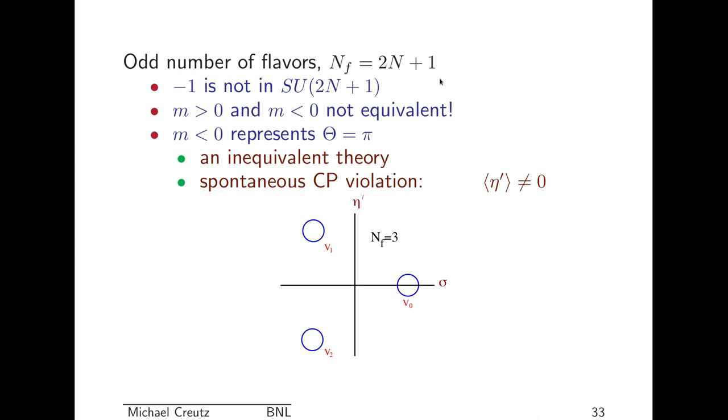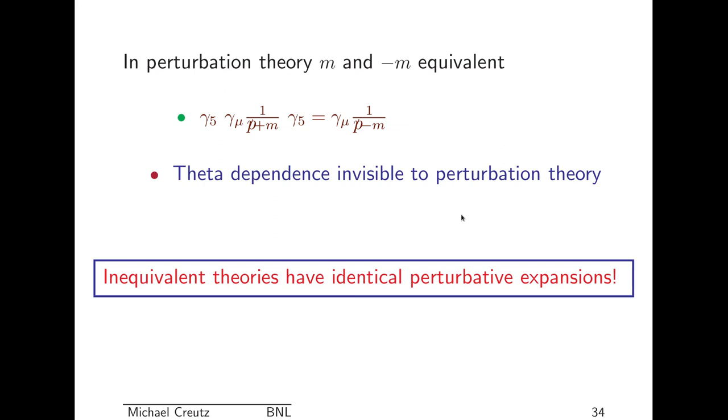Okay, so now we're going to talk a little bit about an odd number of flavors. N_f is 2N plus 1. Minus 1 is not an element of SU of an odd number. This means that a positive mass theory and a negative mass theory are non-equivalent. I can't rotate M into minus M. And in fact, M less than 0 represents theta equals pi, which is an inequivalent theory. And at theta of pi, I've already argued that there's a sudden jump. You're right on the transition. And that transition is basically a spontaneous CP violation. So here's three flavors. There's three minima. And for positive mass, you get your usual thing here. But if I try to tilt it to the left, I've got two possibilities for a vacuum. And so the theory spontaneously will pick one or the other, and there'll be a spontaneous CP violation in three-flavor QCD with a negative mass. And then the eta prime has an expectation value, so it is actually a CP-violating phase.